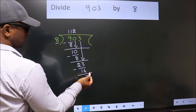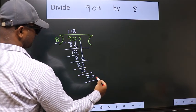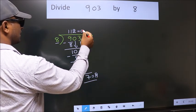No more numbers to bring down. So, we stop here. This is our remainder. This is our quotient.